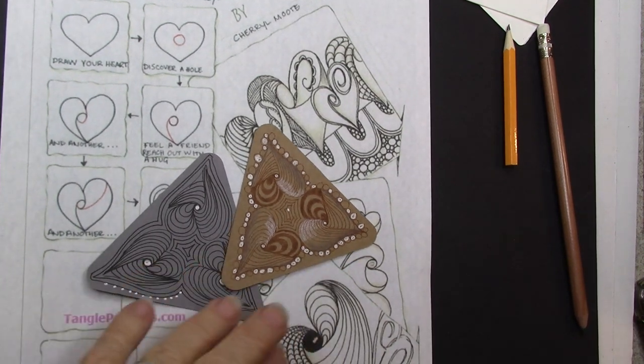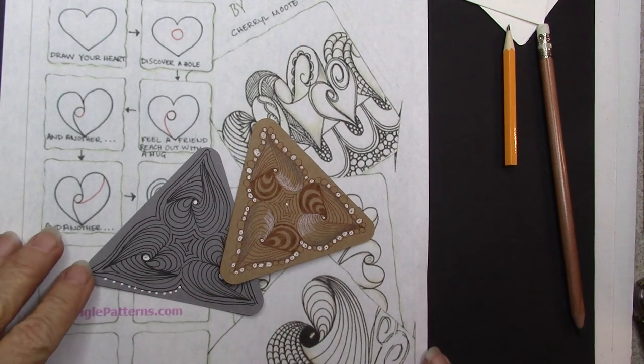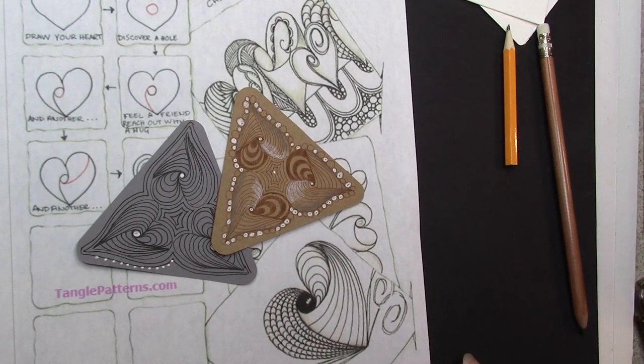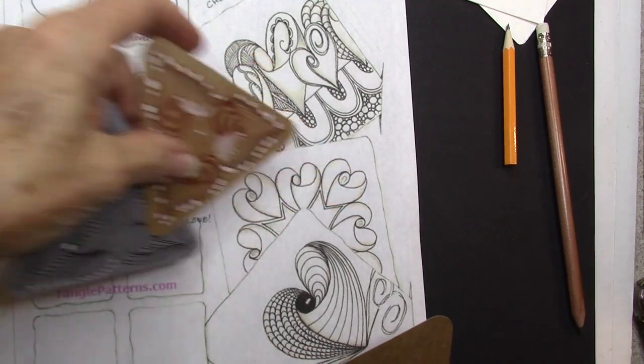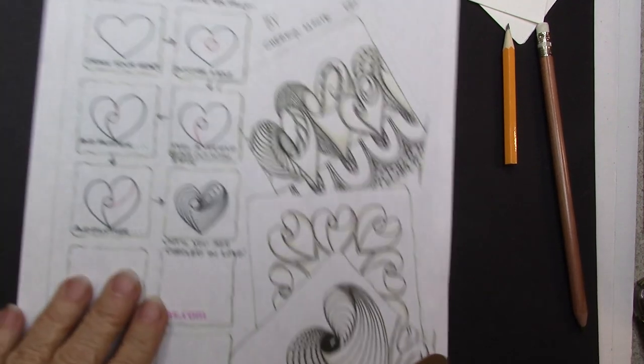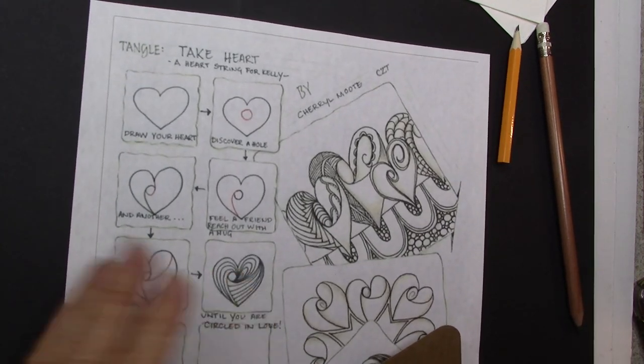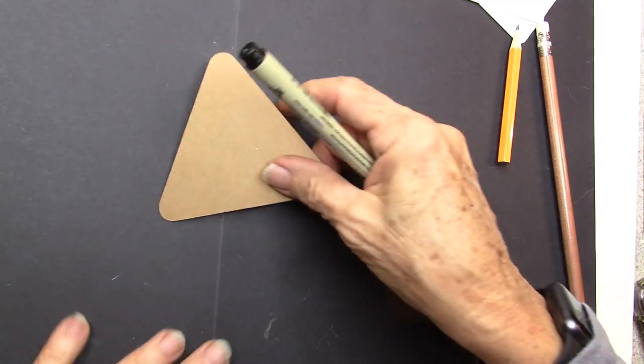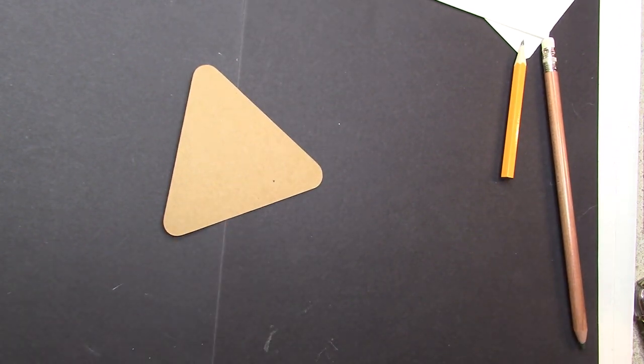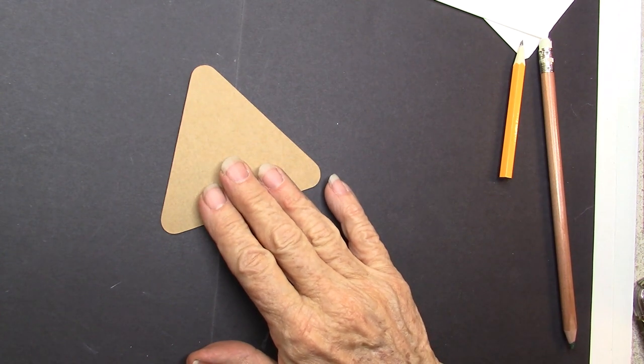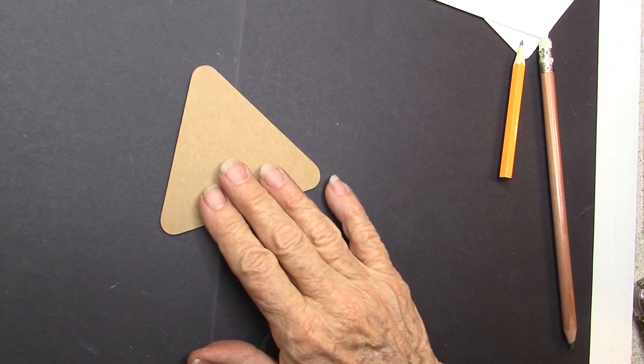My little granddaughter who's five said, I like the heart one as I was drawing today. I'm going to do it on a triangular shaped tile. This is the step outs and I will try to post them on my blog. I'm just going to do it on a 3Z or a triangle tile.